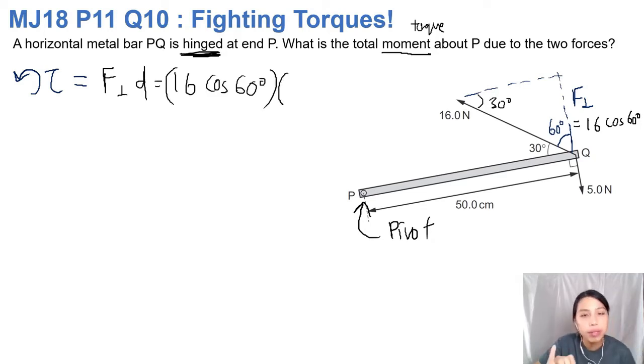So you write it out: force perpendicular times distance. What's our force? 16 cos 60. Times distance, 50 cm. Oh wait, don't write 50 cm. Torque has a unit: newtons are already in meters, so let's change it all to meters for convenience. So 0.5 meters.